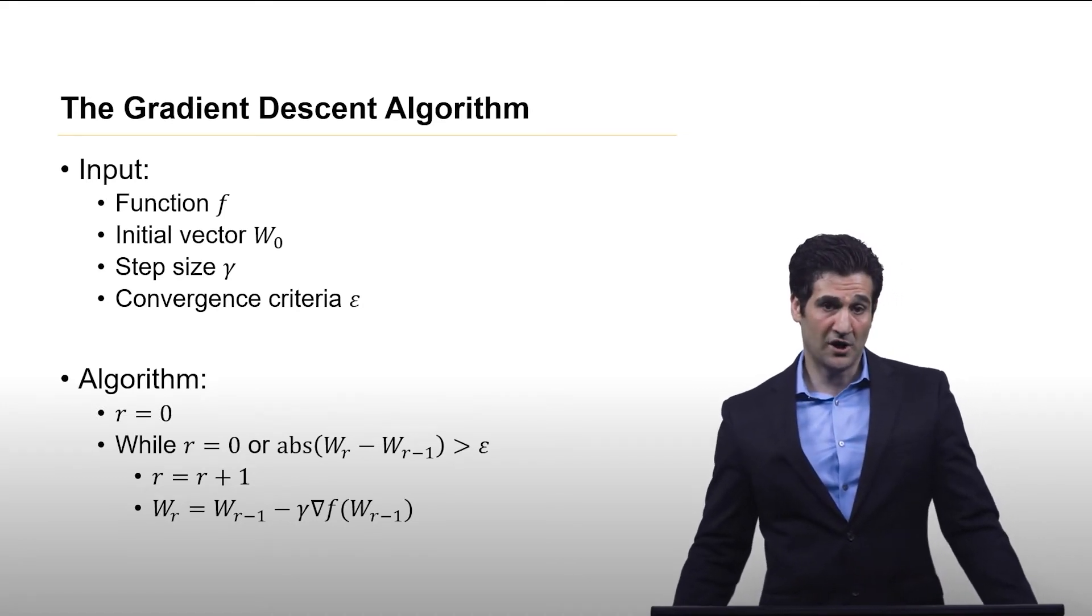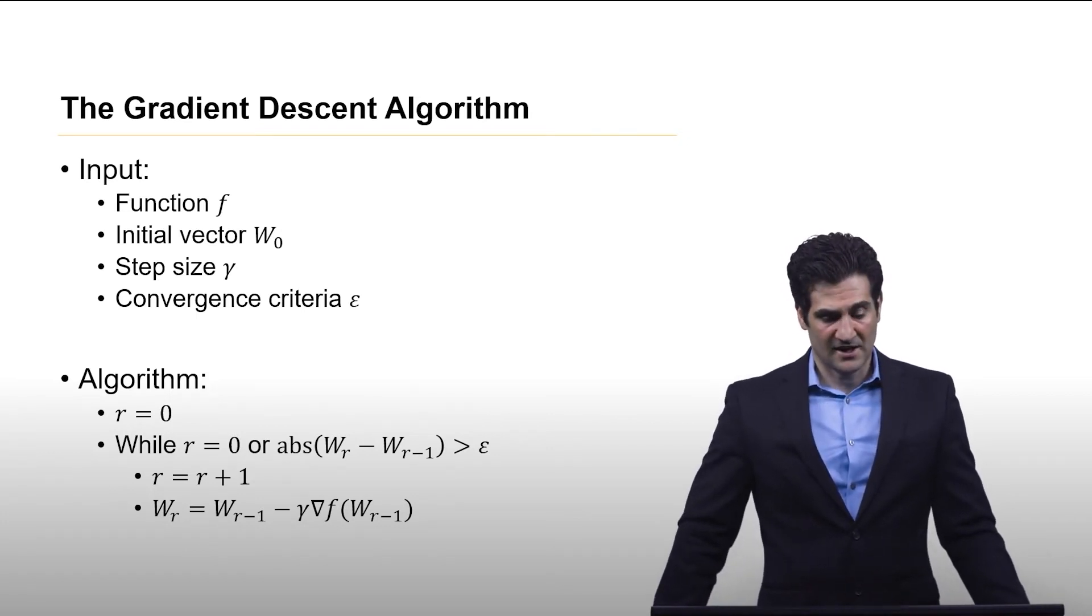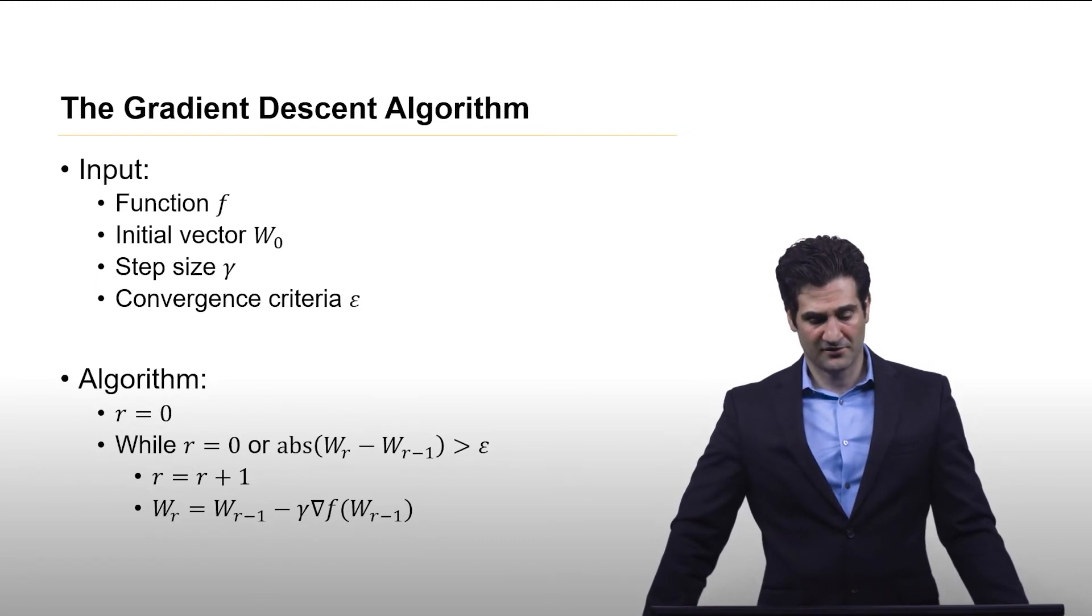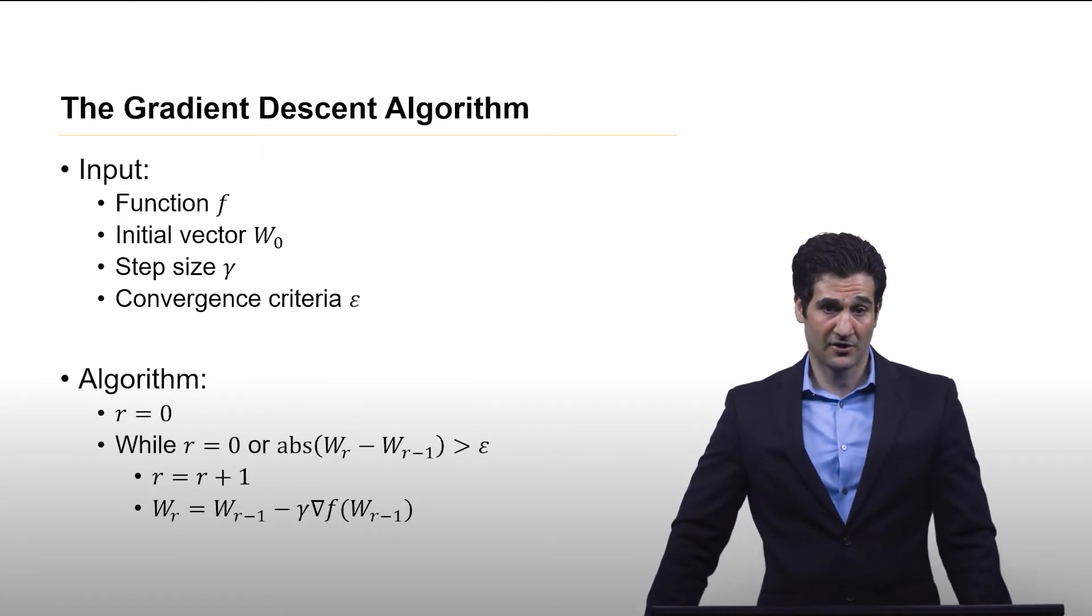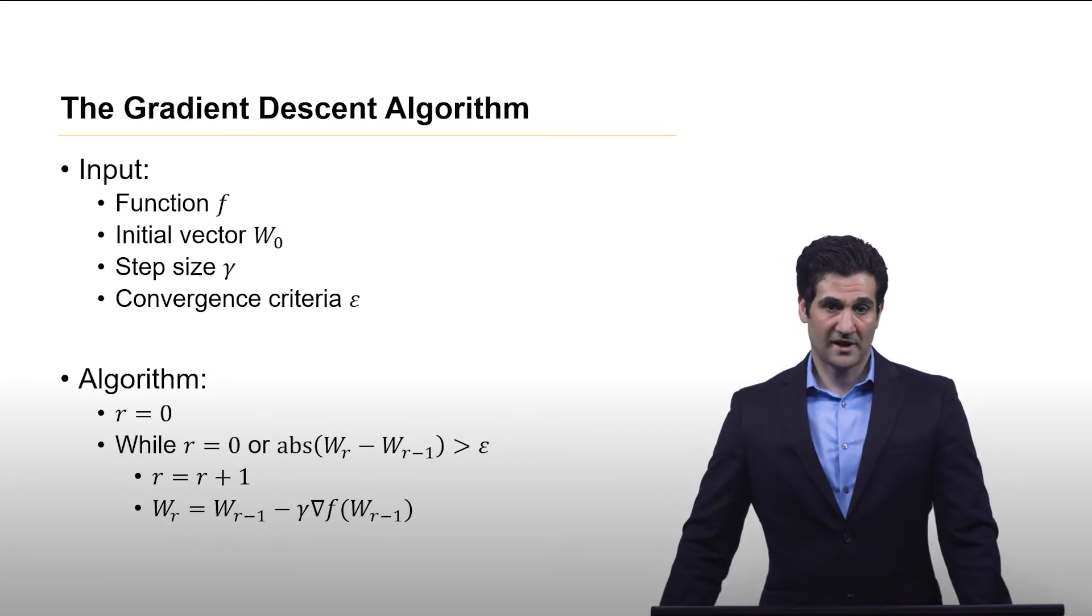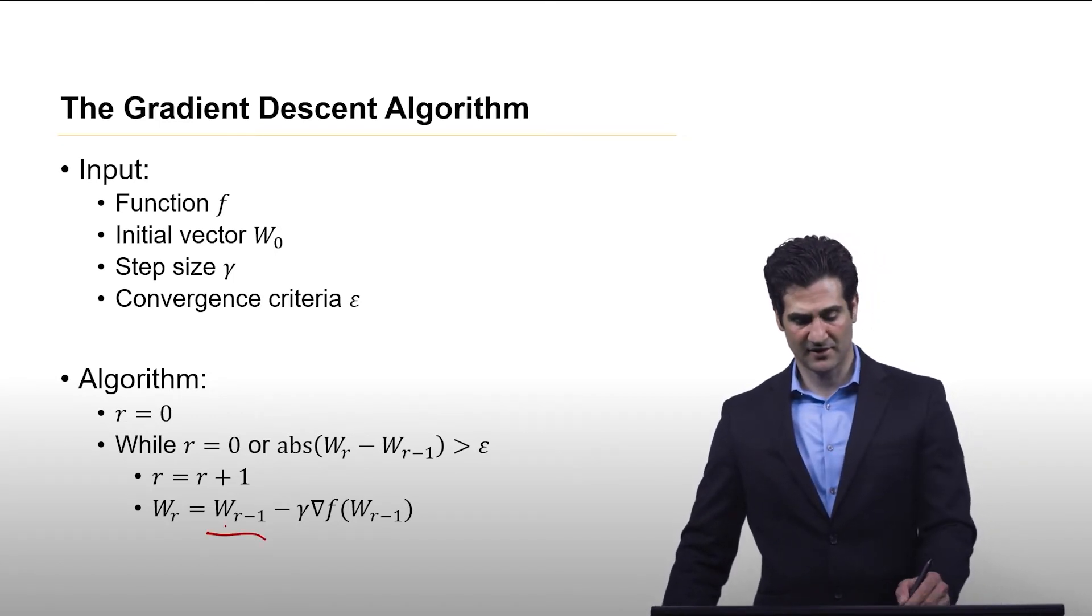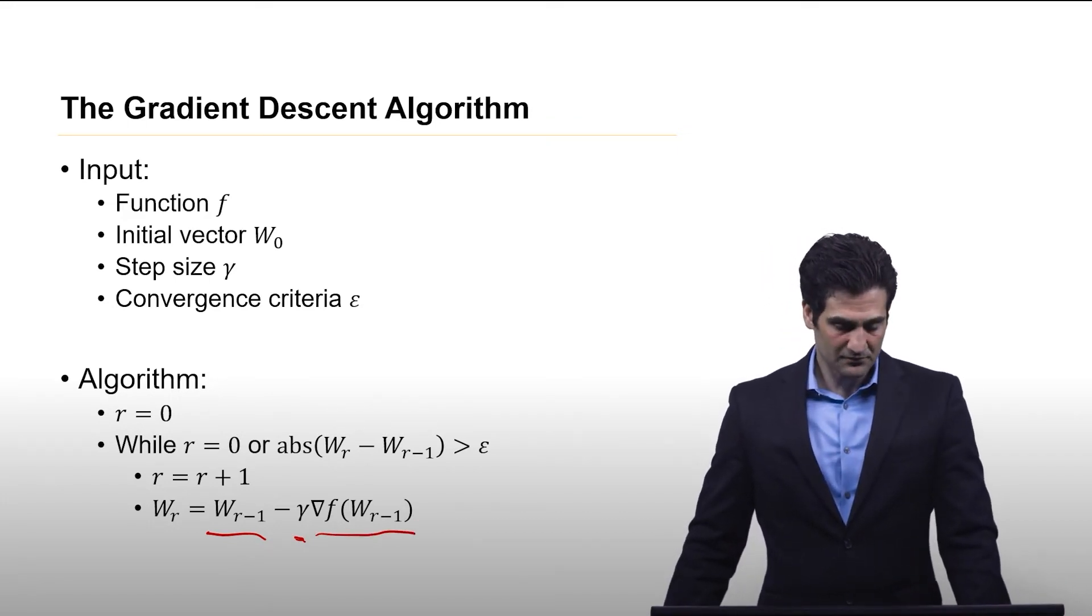So here's the algorithm. Step one is we have this helper variable called r that's just to keep track of the number of iterations. And then if r equals zero, or if the absolute value of the difference between the weights for the current and the last weight vector we've created is greater than epsilon, then we do the following. We iterate r by one. And now we have a new weight vector that is produced by taking the weight vector of the previous iteration and subtracting the step size multiplied by the gradient vector of the weight vector for the last iteration. And that's really it.